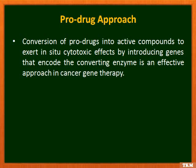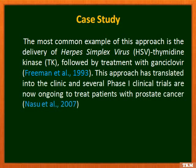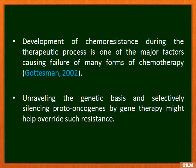This prodrug approach is effective in cancer gene therapy. The most common example is delivery of herpes simplex virus thymidine kinase (HSV-TK) followed by treatment with ganciclovir. This approach has translated into the clinic and several phase one clinical trials are now ongoing to treat patients with prostate cancer. Development of chemo-resistance during the therapeutic process is one major factor leading to failure of many forms of chemotherapy. Gene therapy can help by selectively silencing the proto-oncogenes that might help override such resistance.